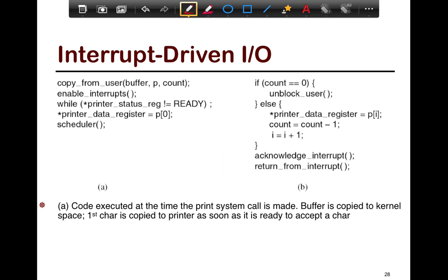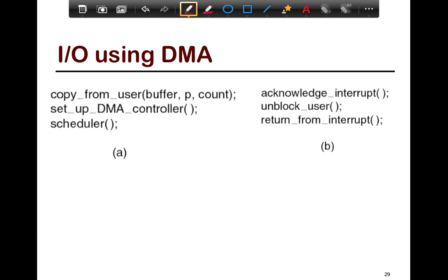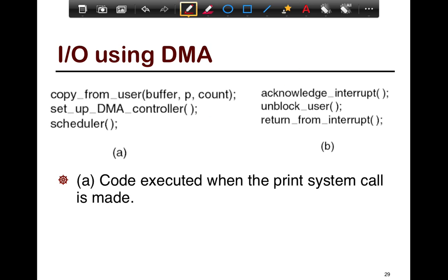Another way of doing this is with DMA, which gets rid of the loop that transfers the data buffer byte by byte. You set up the DMA controller to feed things into the printer and then invoke the scheduler to do something else. The DMA takes care of going through byte by byte feeding it all into the printer. When it's finally done, it raises the interrupt handler. You acknowledge it, unblock the user, and return from the interrupt — no polling needed and no byte-by-byte iteration.